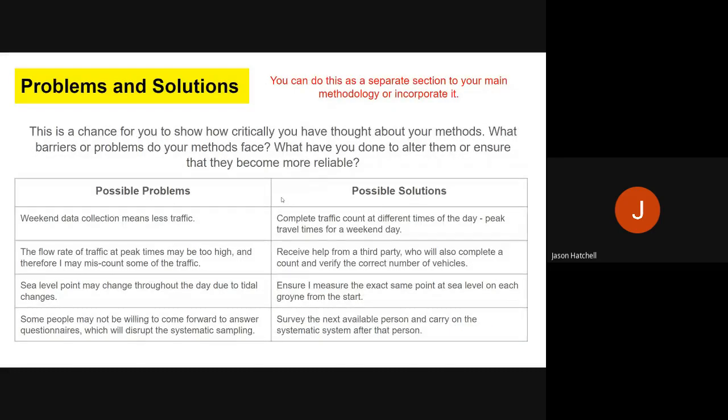You also need a section, either paragraphs or in your table, about the problems each method may have and the solutions you've come up with to fix those problems. This is a chance to show you've critically thought about your methods and tried to design the best possible methods to get the best possible data and make them most reliable. I've listed some possible problems you might face and some possible solutions.